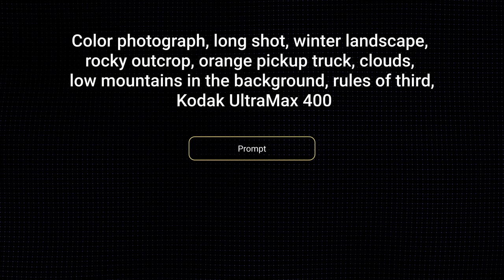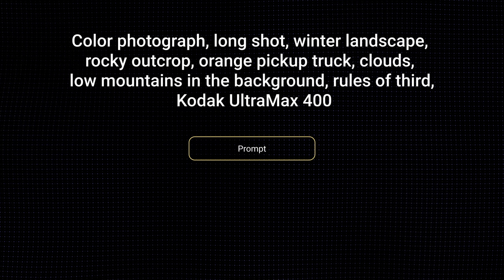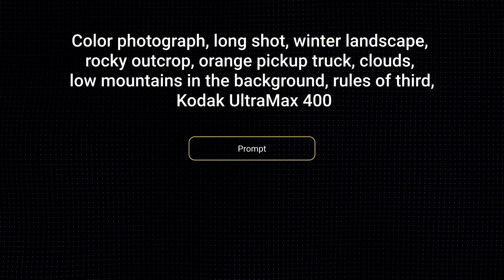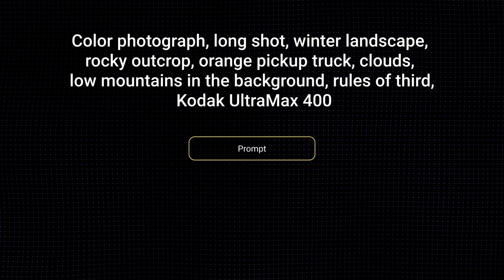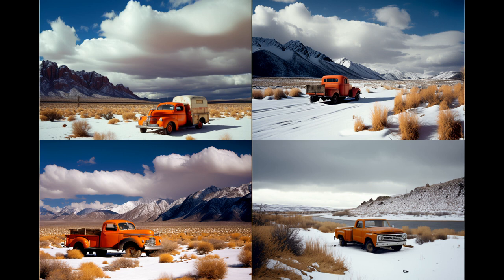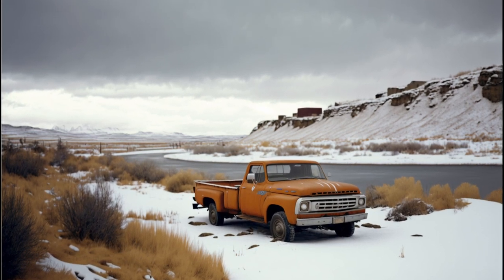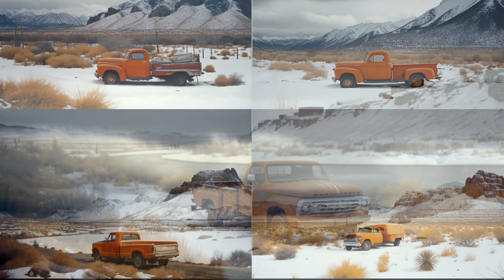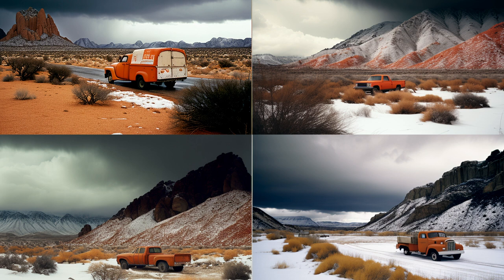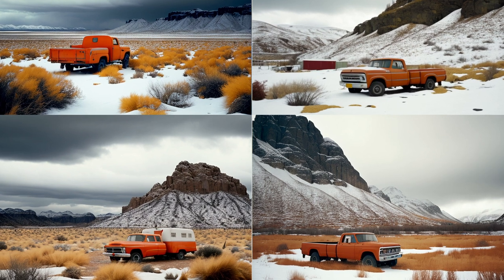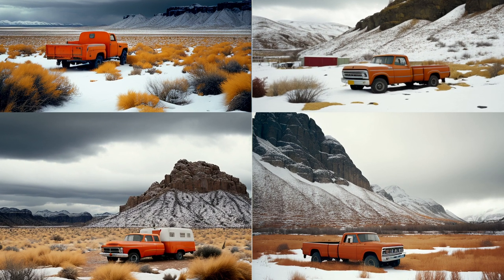Let's try another image — a new composition. Here's the prompt: color photograph, long shot, winter landscape, rocky outcrop, orange pickup truck, clouds, low mountains in the background, rule of thirds, Kodak Ultramax 400. Most of the images are very bright and sunny; the lower right is more of what I'm looking for. Let's add 'overcast' to the prompt. I wanted to get the truck further in the distance, so I added 'in the distance' after 'truck,' but that did not seem to have any impact. You can set yourself up for some challenges when you try to control the composition. Modifying the prompt to have the truck in the background didn't change the composition either.